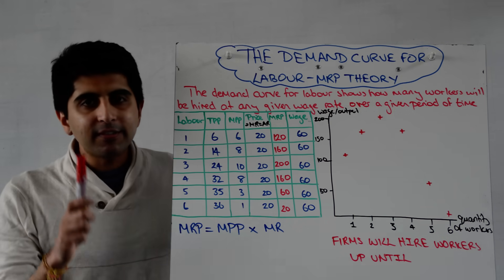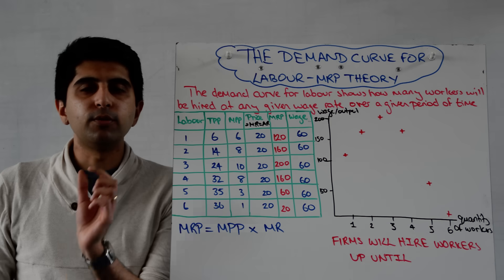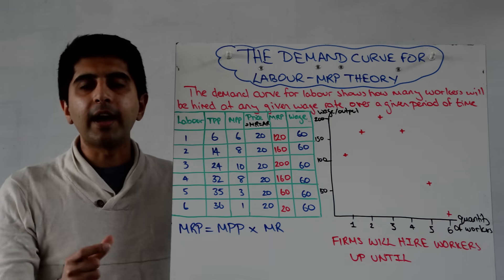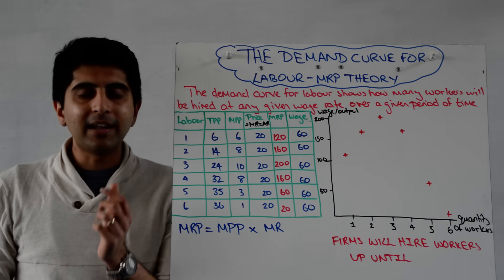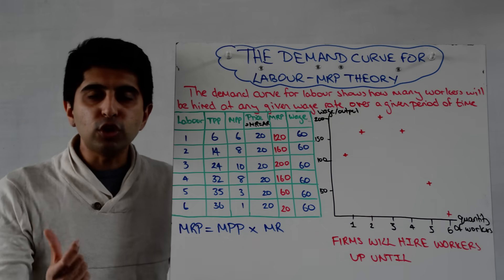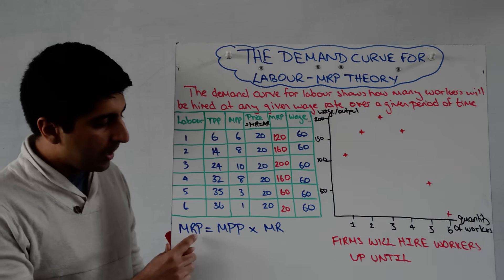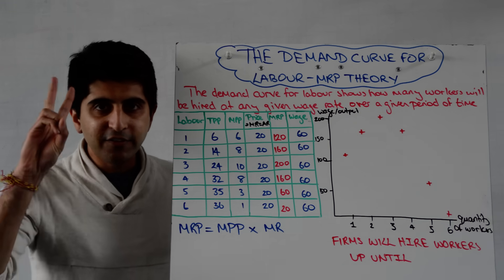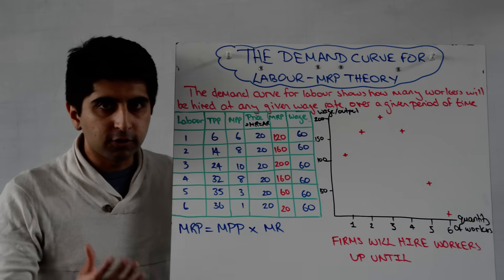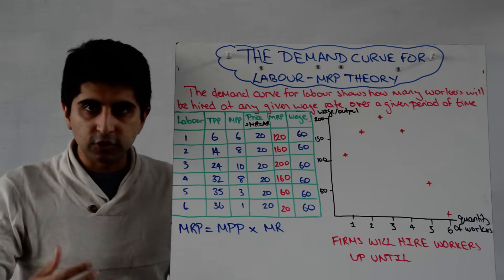Firms will base their demand decisions for labour on marginal revenue product (MRP) — the extra revenue generated when an additional worker is hired. That's how firms base their demand decisions for labour. You need to understand what MRP is and, crucially, you need to know how to calculate it. MRP is equal to marginal physical product (i.e., marginal product) multiplied by marginal revenue.